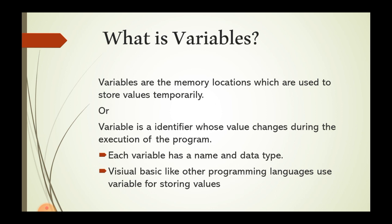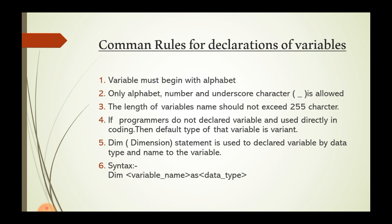Visual Basic uses variables for storing values, like C and C++. Some common rules for declaring variables: first, a variable name must begin with an alphabet. Second, only alphabets, numbers, and underscores are allowed — no symbols or special characters.